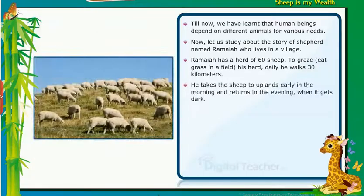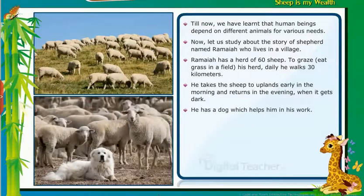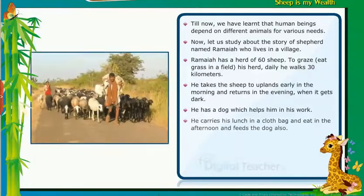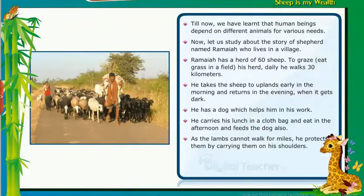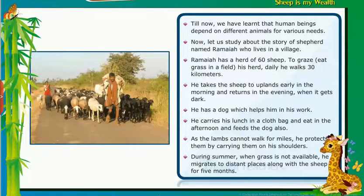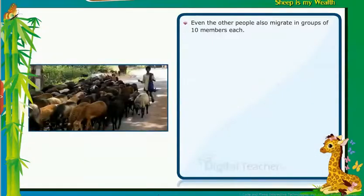He takes the sheep to uplands early in the morning and returns in the evening when it gets dark. He has a dog which helps him in his work. He carries his lunch in a cloth bag and feeds the dog also. As the lambs cannot walk for miles, he protects them by carrying them on his shoulders. During summer, when grass is not available, he migrates to distant places along with the sheep for five months. Other people also migrate in groups of 10 members each.